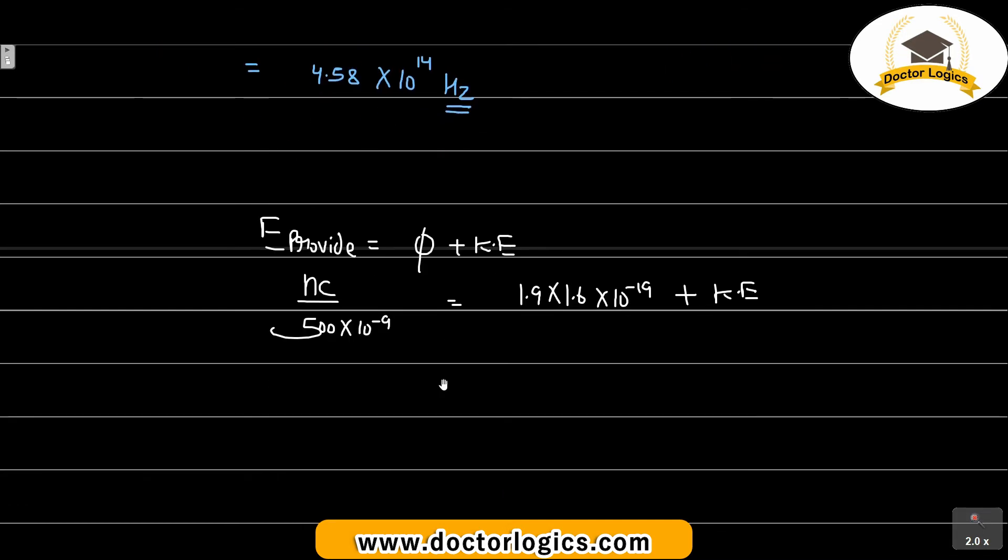First we calculate this value. This value becomes 19.89 divided by 500, which is 0.039 into 10 is to the power minus 26 plus 9.